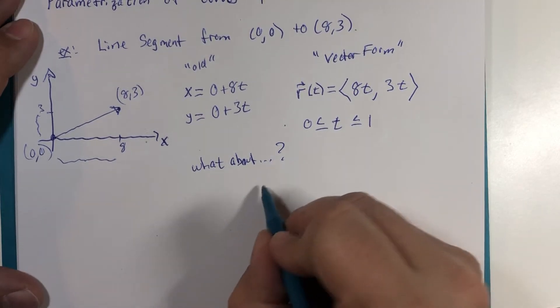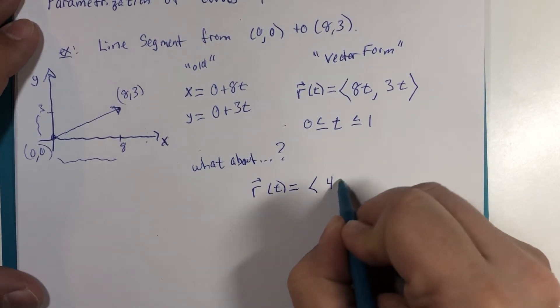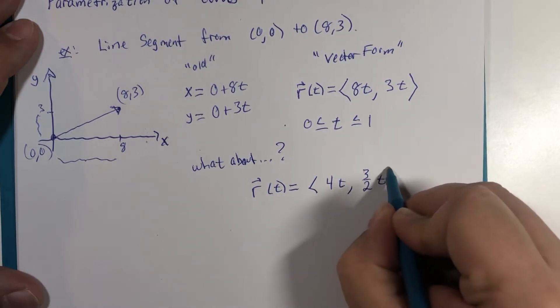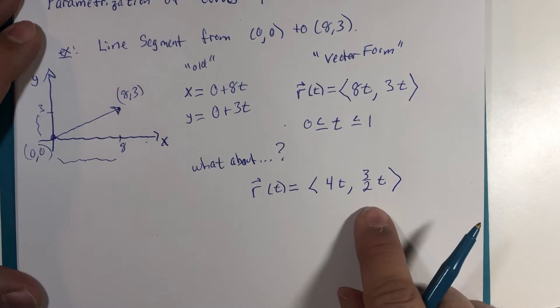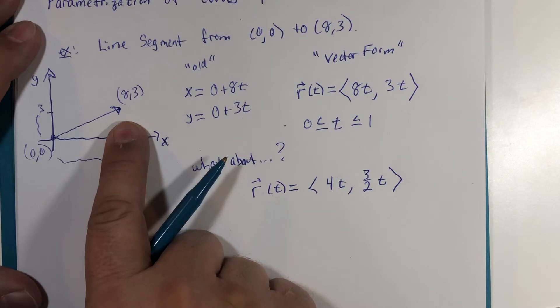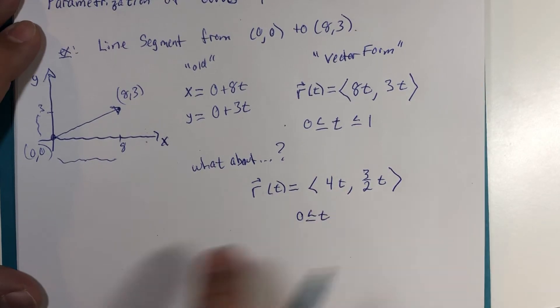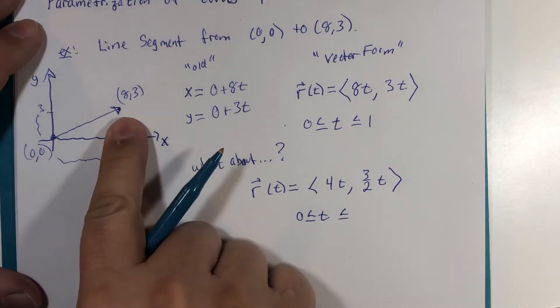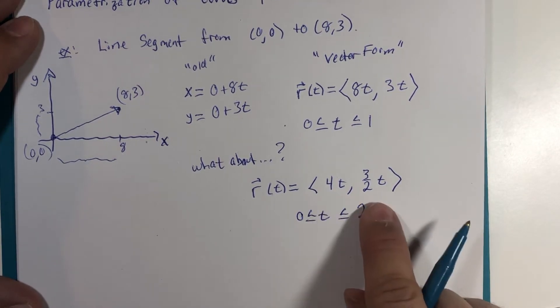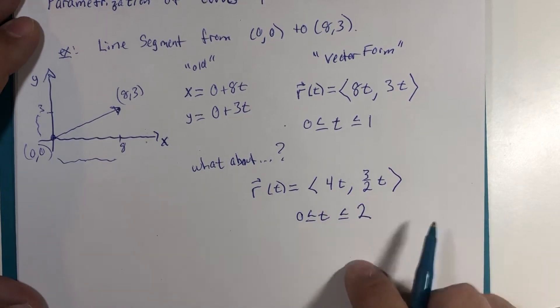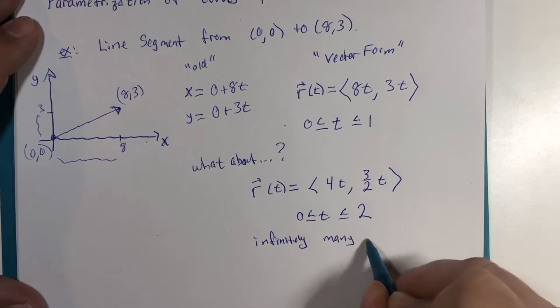What if we said that the x component of this line was only half the speed and the y component was half the speed? We call this a scalar multiplier. How long would it take this to get from (0,0) to the point (8,3)? In other words, if we start at time zero, four times zero and three halves times zero are both zero. But what time will we arrive at our endpoint? That's right, it'll take two units of time or two seconds to get there. Two times four is eight and two times three halves is three. So there are infinitely many possibilities.